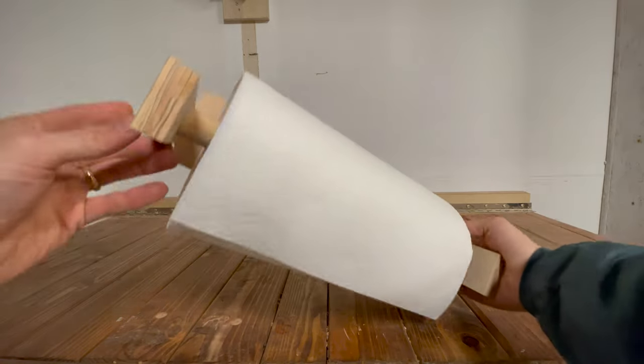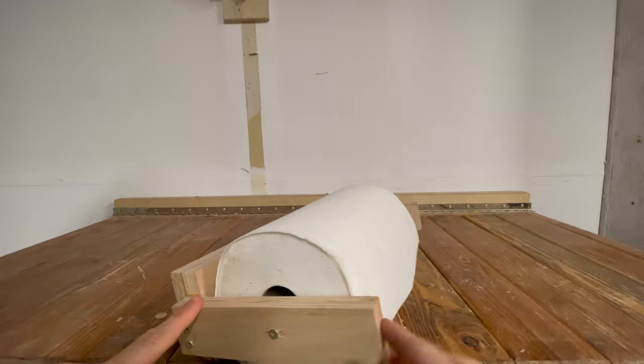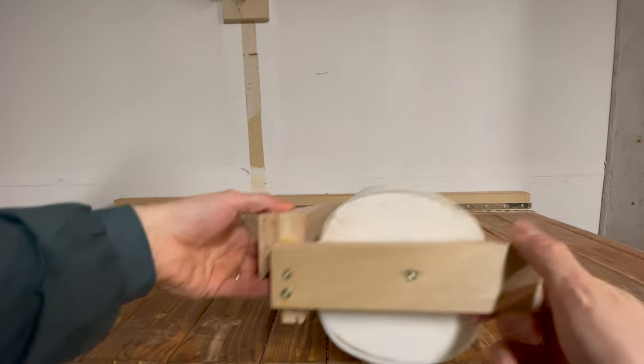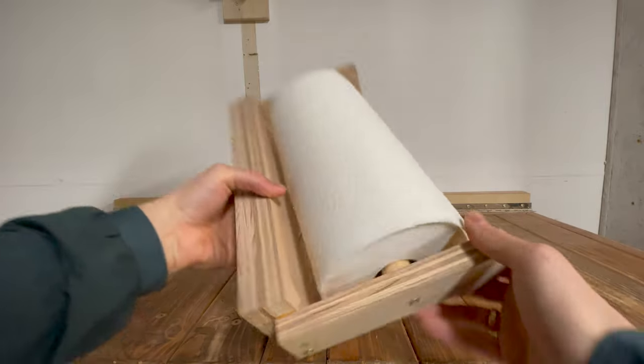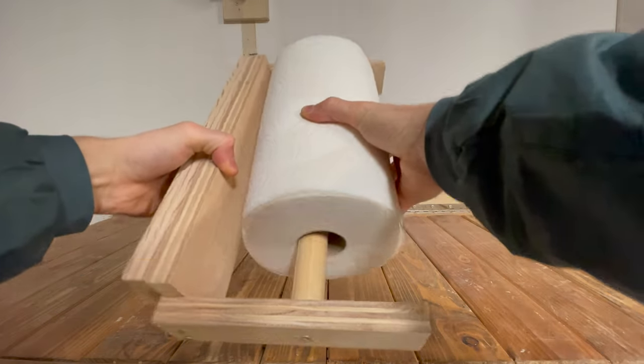In this thing we've just got a couple rectangular pieces on either end, a French cleat that goes along the back, another larger rectangle piece on the back there, and a one-inch dowel that this can ride on.